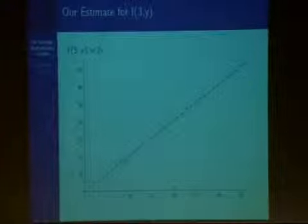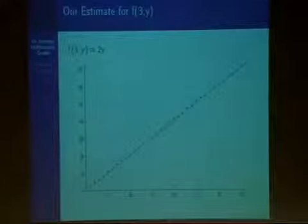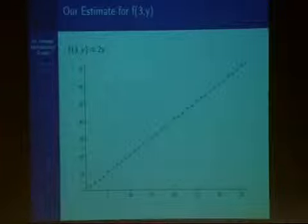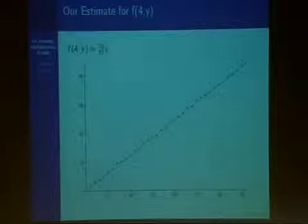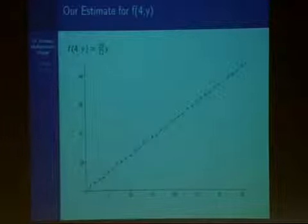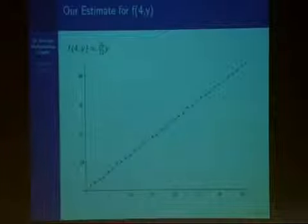For the example of x=3, the average value is 2, so we obtain the following linear approximation. However, as you can notice, none of the values of the function are below our approximation, but a substantial number are above. Our approximation needs to be shifted upwards to be more accurate. If we look at f(4, y), a similar pattern holds — we need to shift our approximation upwards to make it more accurate.